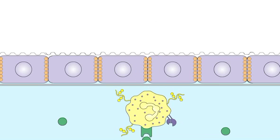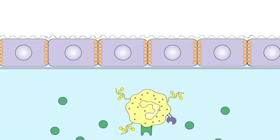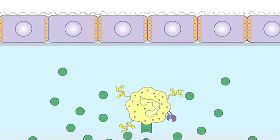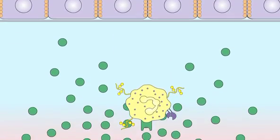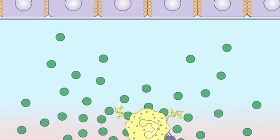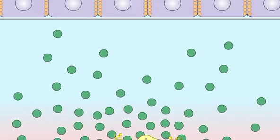Chemokine binding signals the leukocyte to migrate along the chemokine concentration gradient. The site of inflammation is the source of the chemokine gradient. Hence, leukocytes are attracted from the blood towards sites of infection.